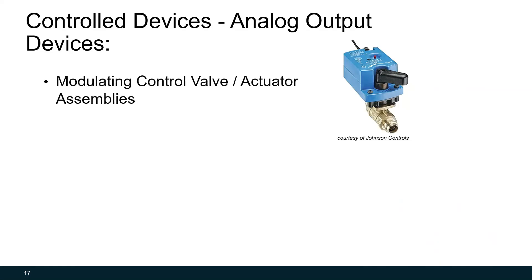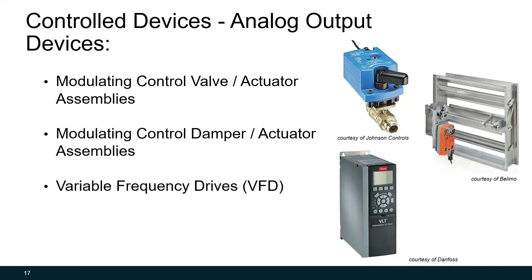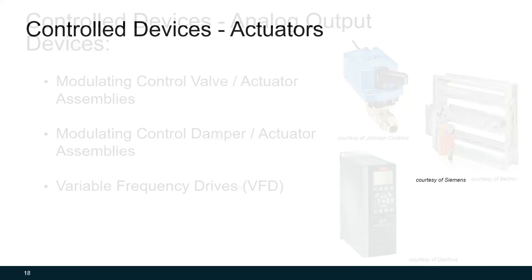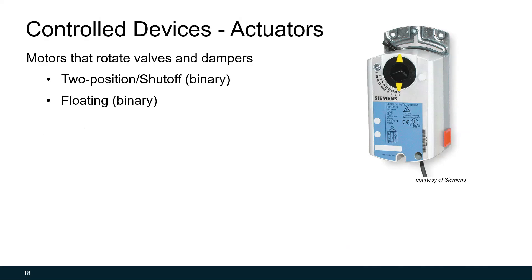There's three main types of analog control devices that you commonly see in HVAC systems. There's the modulating control valve and actuator, the modulating control damper and actuator, and variable frequency drives. We'll go through each of these, but you'll notice that with valves and dampers, they each have actuator assemblies. So what is the actuator? The actuator is simply a small motor that will rotate the valve and damper stems. They can be two-position, as discussed before, so they're binary. They can be floating, which is a version of binary. Or they can be modulating, which is very common as well. The way modulating works is a signal comes from the controller. That signal essentially will be telling the motor, hey, open to 40% open. And the motor will rotate exactly to 40%.